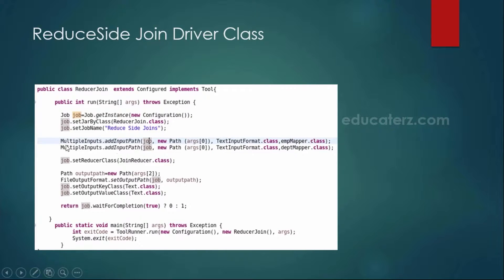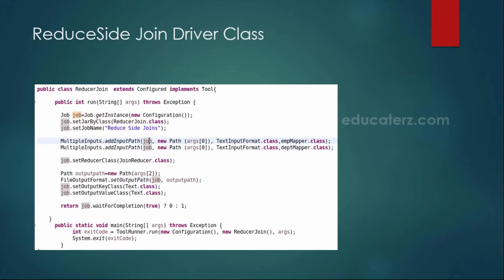When you see this multiple inputs dot addInputPath, the arguments it expects are a job object, a path object, the input format class — in further modules we are going to discuss what multiple input format classes are available — and the name of the mapper which you are going to handle. You also set up the reducer class using job dot setReducerClass, and the rest you need not modify. You can write a tool runner program or a plain driver class; it does not matter.